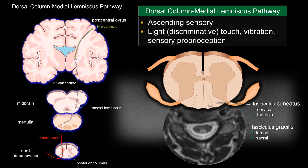The whole pathway is referred to as the dorsal column medial lemniscus pathway. It is an ascending sensory pathway responsible for light touch, fine touch, and discriminatory touch — including two-point discrimination on your physical exam. Vibrational sensation as well as proprioception are all associated with this pathway.